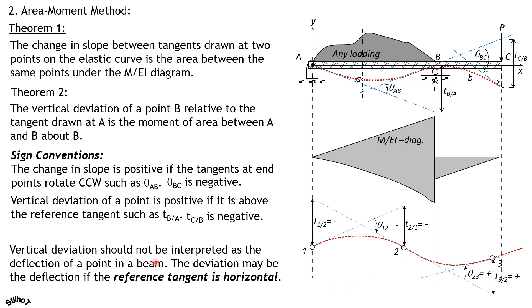Vertical deviation should not be interpreted as the deflection of a point in a beam. The deviation may equal the deflection only if the reference tangent is horizontal — such as for a cantilever beam where one end is fixed. If the tangent at the fixed end is the reference tangent, then the vertical deviation of a point relative to that horizontal tangent automatically equals the deflection. So now you can practice solving problems on beams and computing deflection and slope at a point.